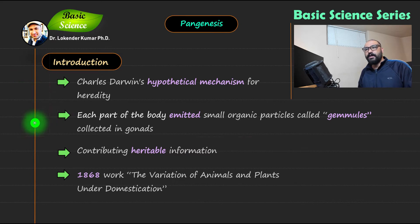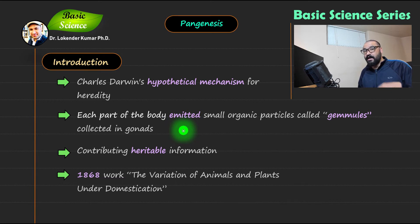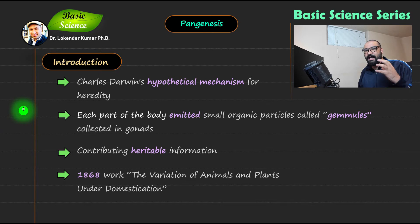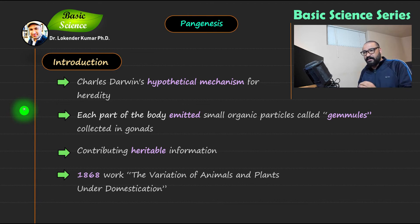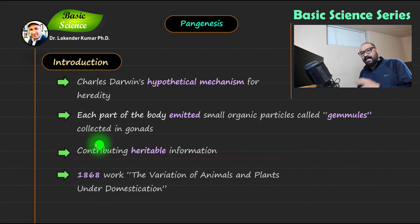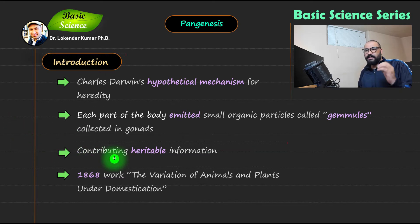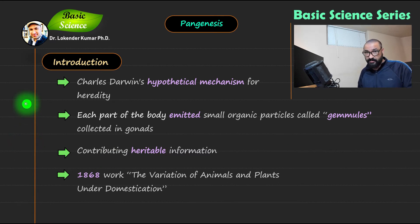Point number two: each part of the body emitted small organic particles called gamules. According to pangenesis, these small particles are formed by each part of the body, gathered in the gonads, and then carry heritable information to the next generation. Of course, this was later rejected, as it is not the case in the transmission of information from one generation to another.